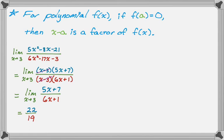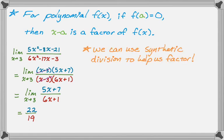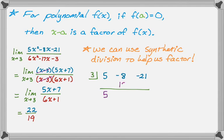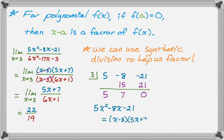Sometimes factoring is hard, and we can often use synthetic division to help. Let me demonstrate with the numerator from that first example. I know that substituting 3 in gives 0, which means x minus 3 is a factor. For synthetic division, I put 3 in the box, then the coefficients of 5x squared minus 8x minus 21: that's 5, negative 8, negative 21. Drop down the 5, multiply 3 times 5 to get 15, add to get 7, multiply 3 times 7 to get 21, add to get 0. This tells me 5x squared minus 8x minus 21 factors into x minus 3 times 5x plus 7.